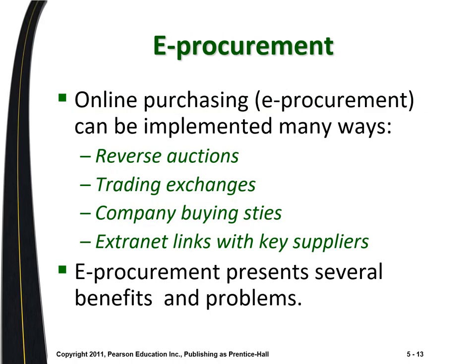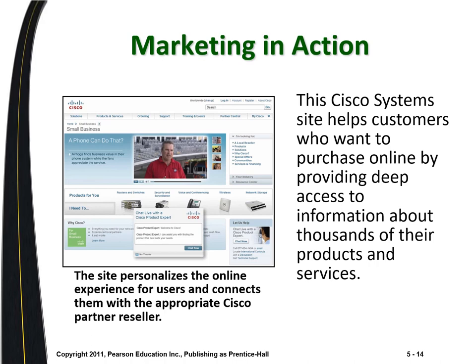One more topic is online purchasing and e-procurement. E-procurement means making digital purchases online. A reverse auction is the opposite of a normal auction: instead of one seller and many buyers, you have one buyer and many sellers — you state what you want to buy, all sellers in the service area make proposals, and you take the best one. There are also trading exchanges, company buying sites where you go through and buy different products ranging from construction machines to reams of paper, and links to key suppliers that make the supply chain more visible on digital platforms.